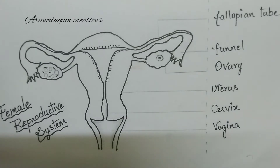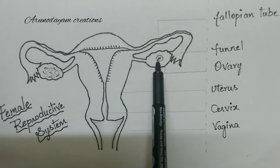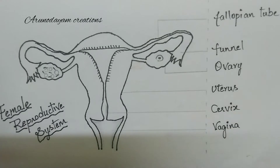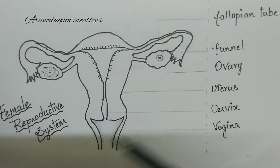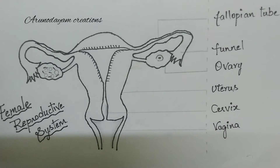These are the parts of the female reproductive system: first, a pair of ovaries. A pair of fallopian tubes where fertilization takes place. This muscular structure is called the uterus, and along with cervix, vagina, and mammary glands, which are useful for feeding the baby with milk after delivery.